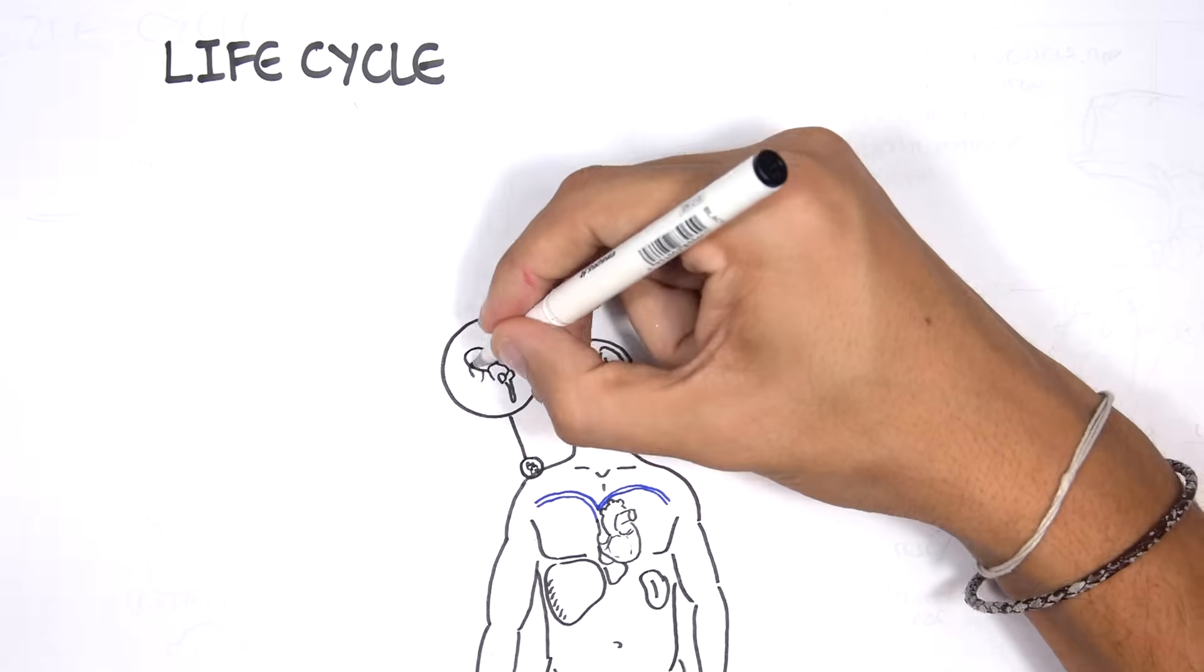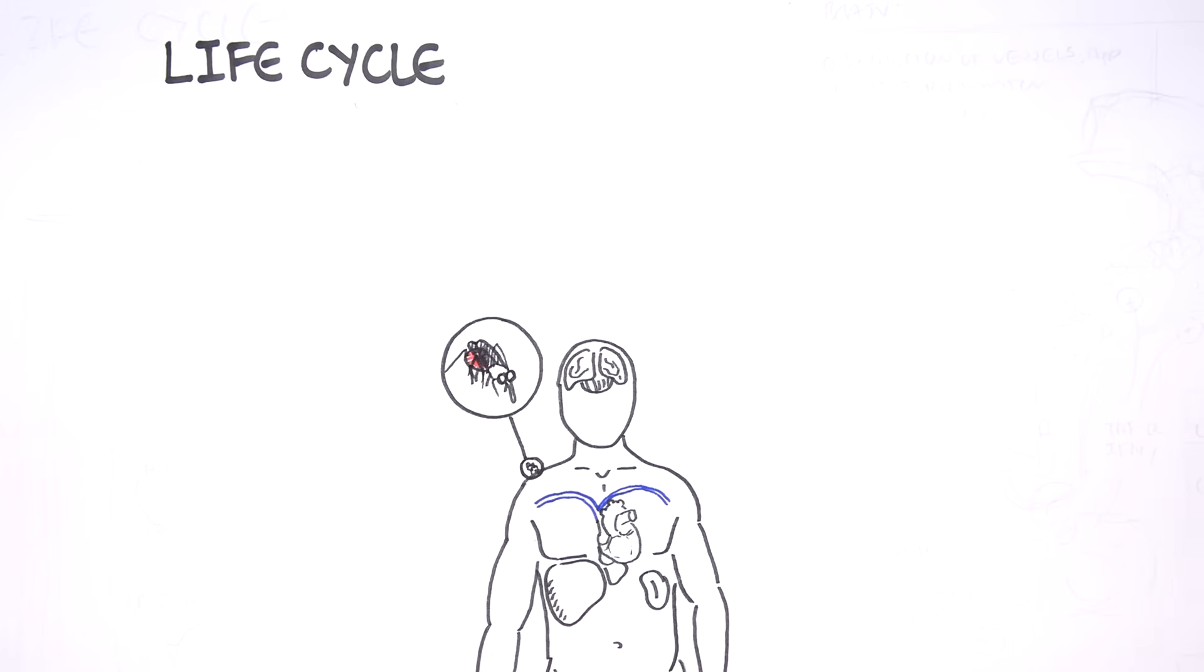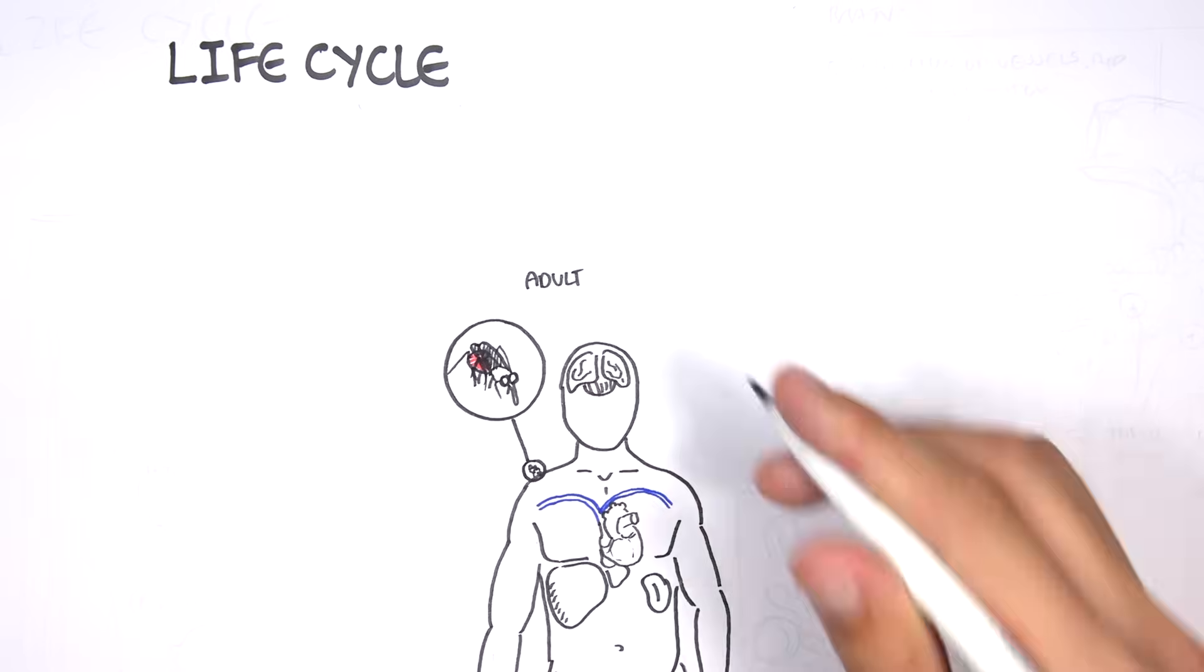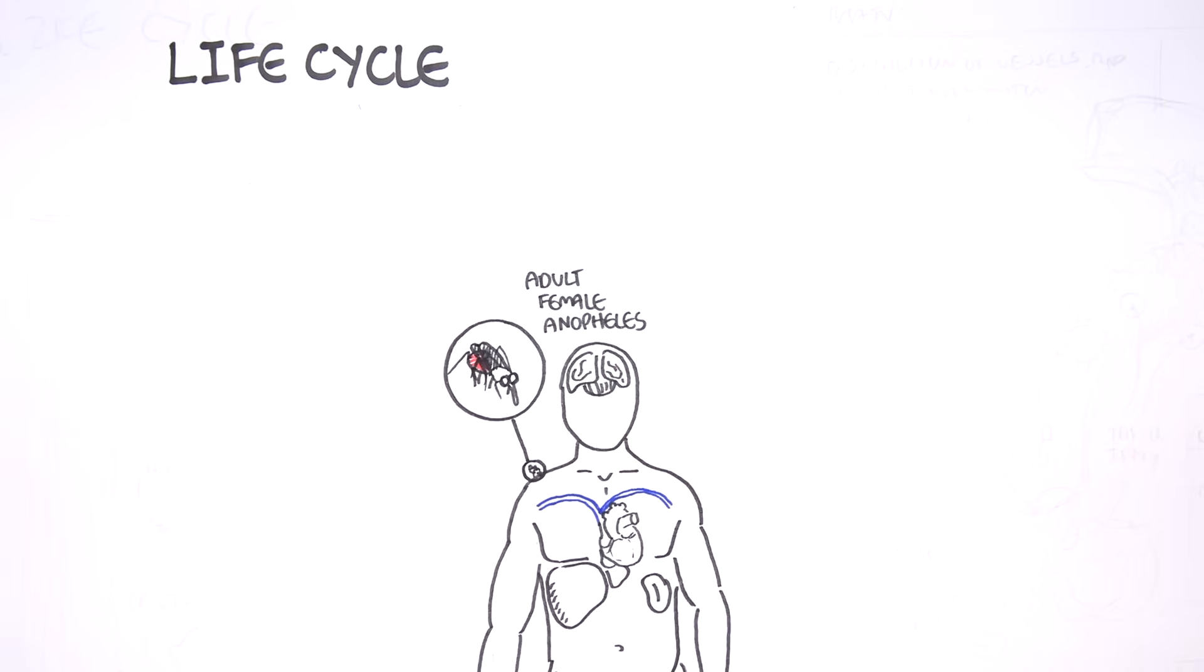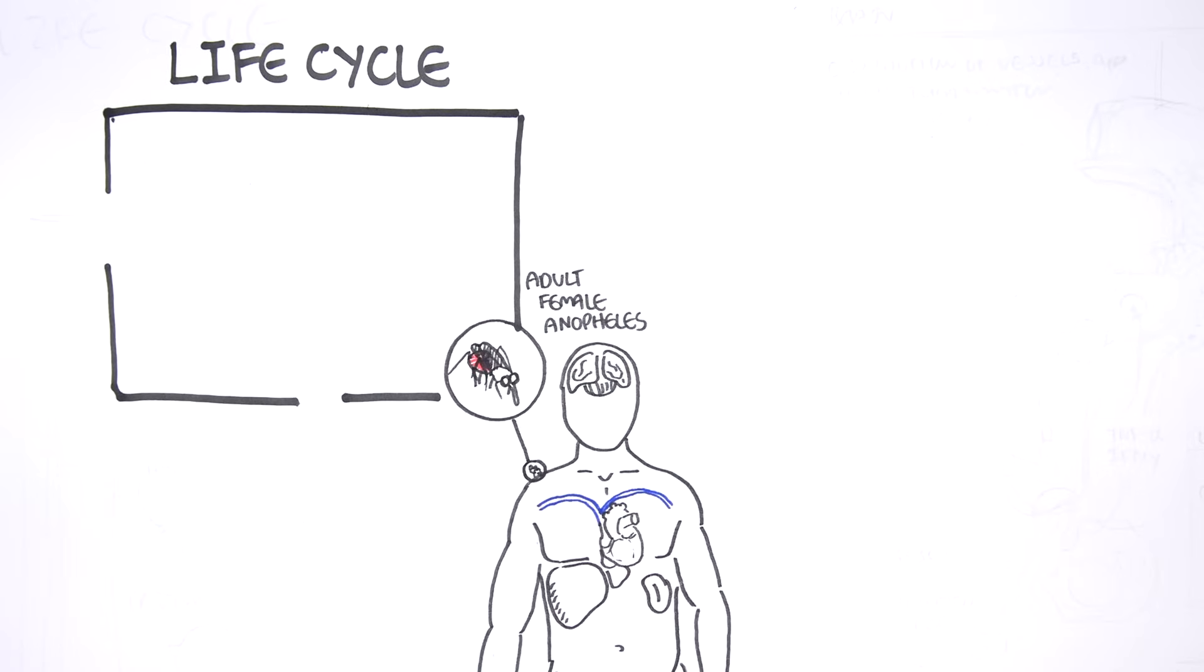The parasite responsible for malaria are the plasmodium species. The plasmodium parasites are actually carried by two types of creatures: one human, the other mosquitoes, Anopheles. So an adult female Anopheles mosquito carries the parasite and can bite this susceptible human. It bites it because the mosquito normally feeds off blood.